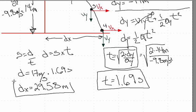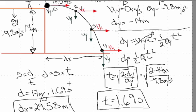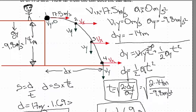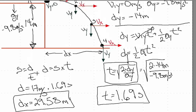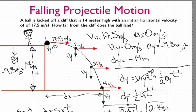Remember, it's a two-part problem. First, find the time — which we found to be 1.69 seconds. An object launched horizontally at 17.5 meters per second from a 14-meter-high cliff takes 1.69 seconds to hit the ground and lands almost 30 meters away. Write down your x's and y's, keep them separate, solve for time first, then use that time to find the distance.